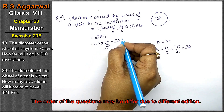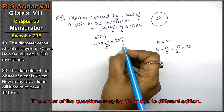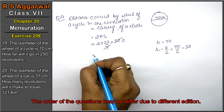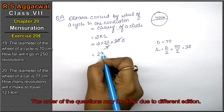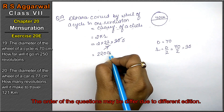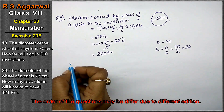So 7 and 7 cancel, 5 × 2 = 10, 2 × 10 = 220 cm. The distance covered in one revolution is 220 cm.